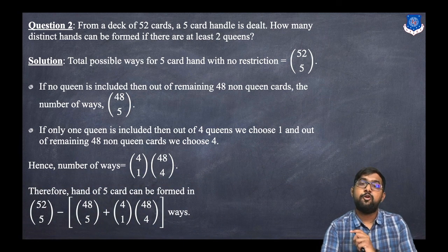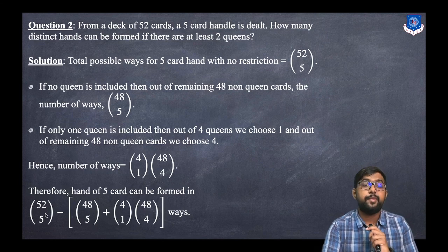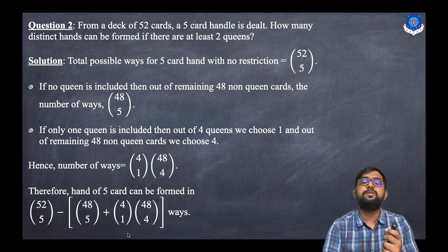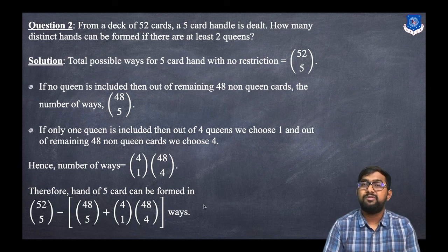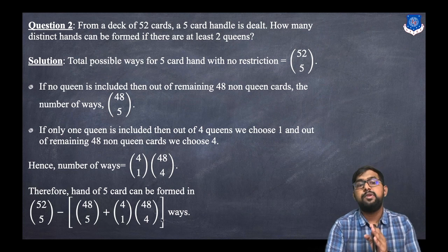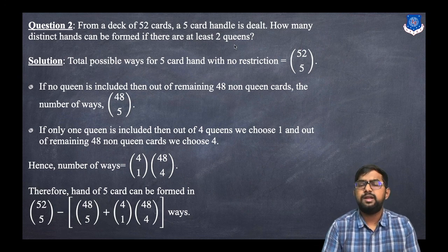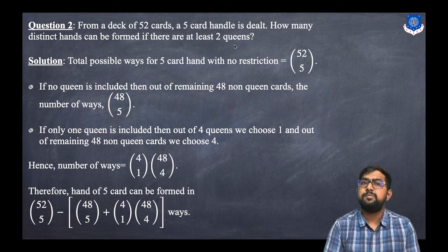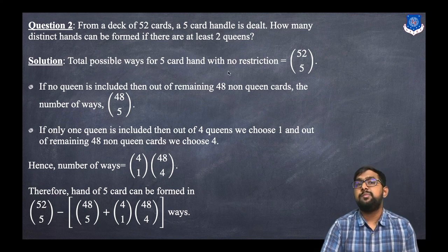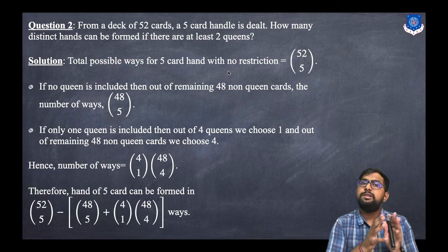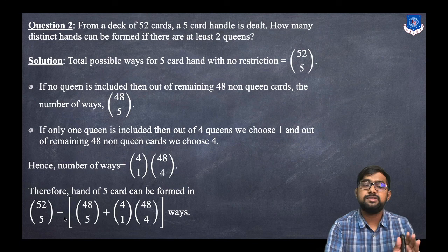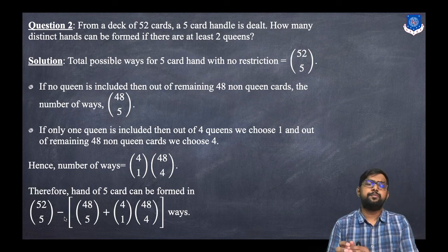Therefore, the number of five-card hands with at least two queens is: 52C5 − 48C5 − (4C1 × 48C4). What we have done is taken all total cases and subtracted the cases with no queen and exactly one queen, since the question asks for at least two queens. Alternatively, we could add cases for exactly two, three, and four queens — both approaches give the same answer.